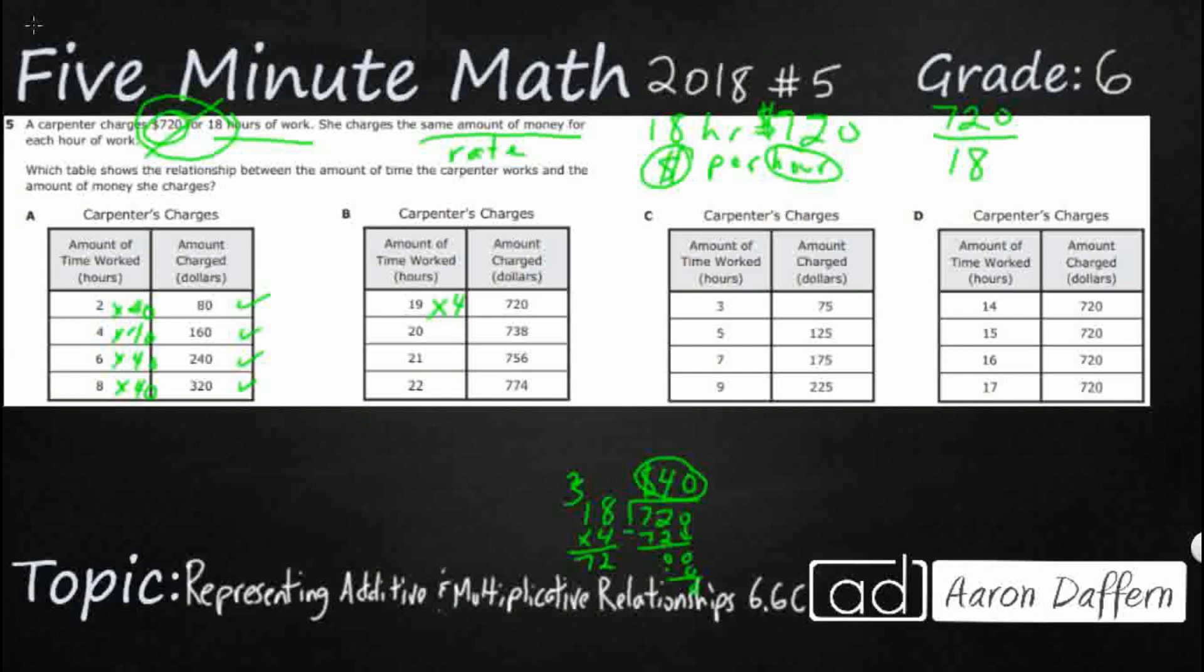So 19 times 40. I don't think that's going to work. But let's just double check. So we've got 0, 0. 4 times 9 is 36. And then 4 times 7. So 7, 60. So we're off by 40.